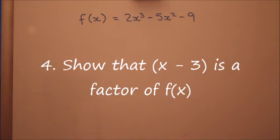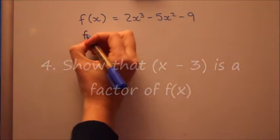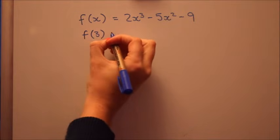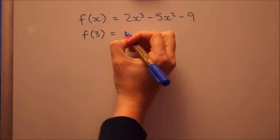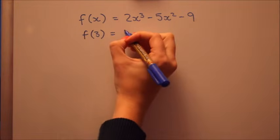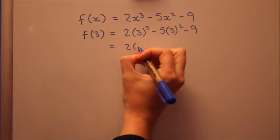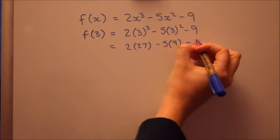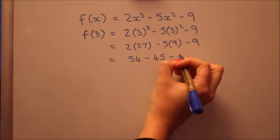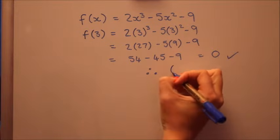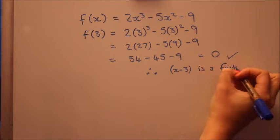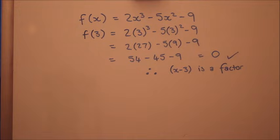To show that x minus 3 is a factor, we need to put in to the polynomial as usual. It was x minus 3, so we're going to put in 3, changing the sign. And because it's a factor, or we're showing that it's a factor, we should get 0. Let's have a go. So because we get 0, it is a factor, and it's nice to write a little sentence at the end there just to show you know what you're talking about.